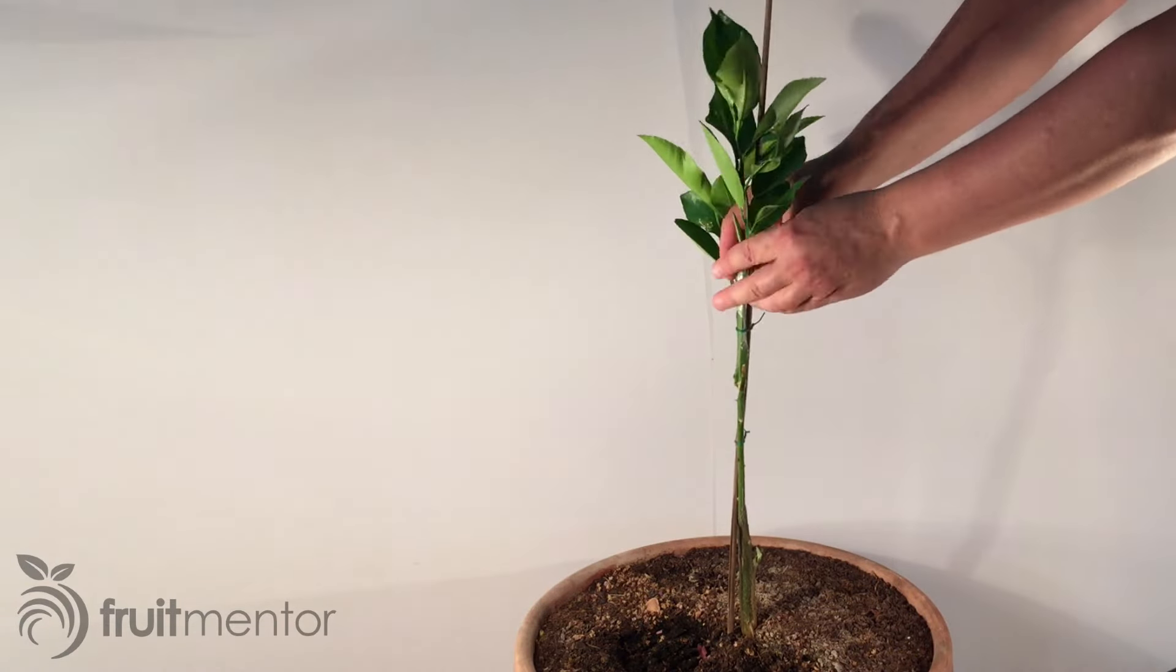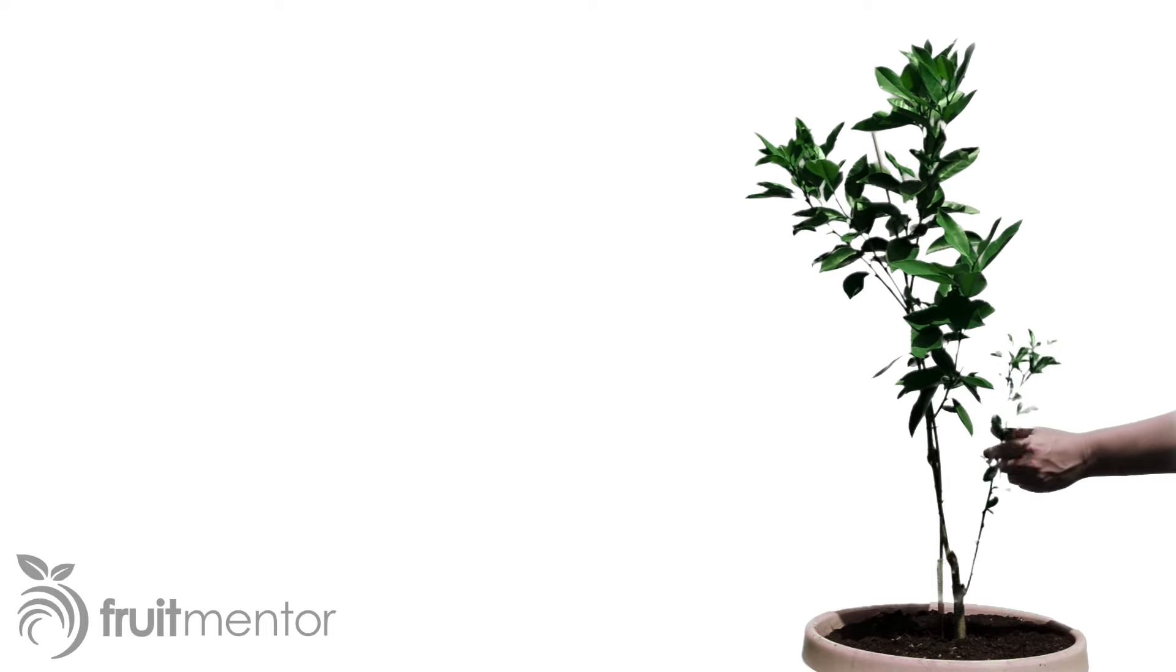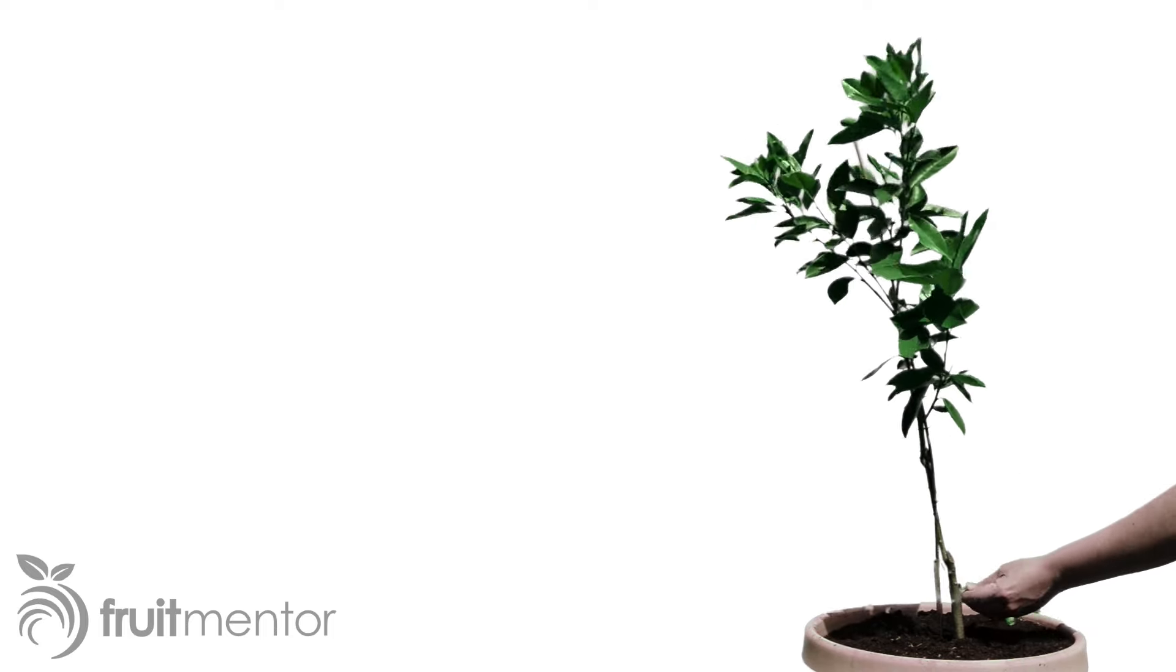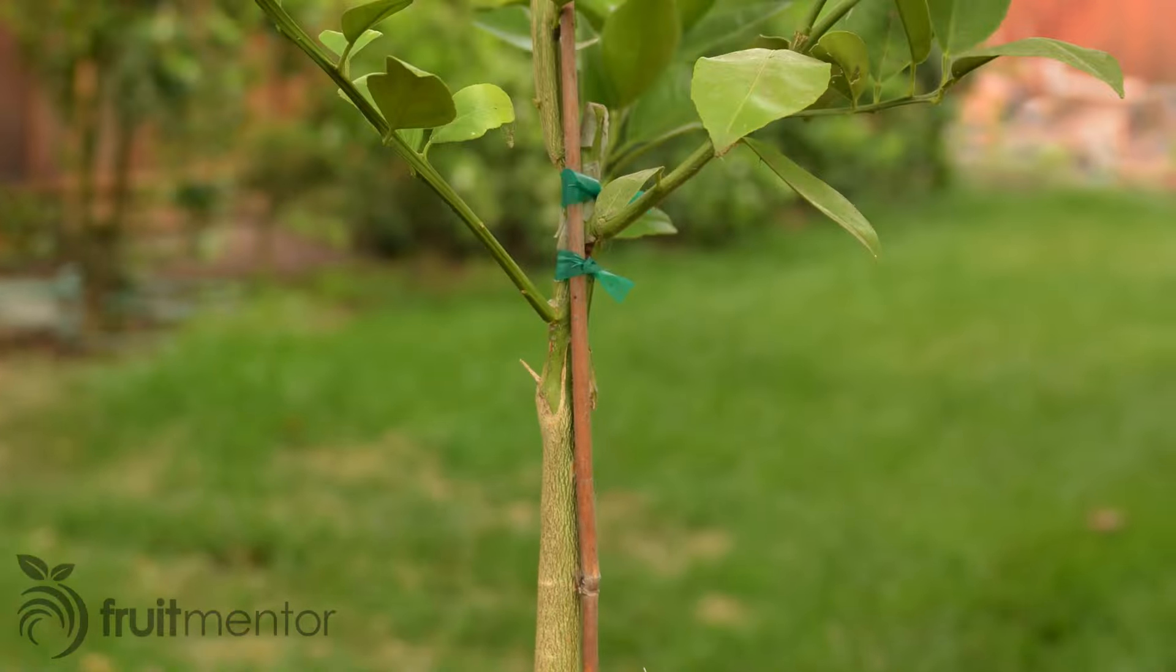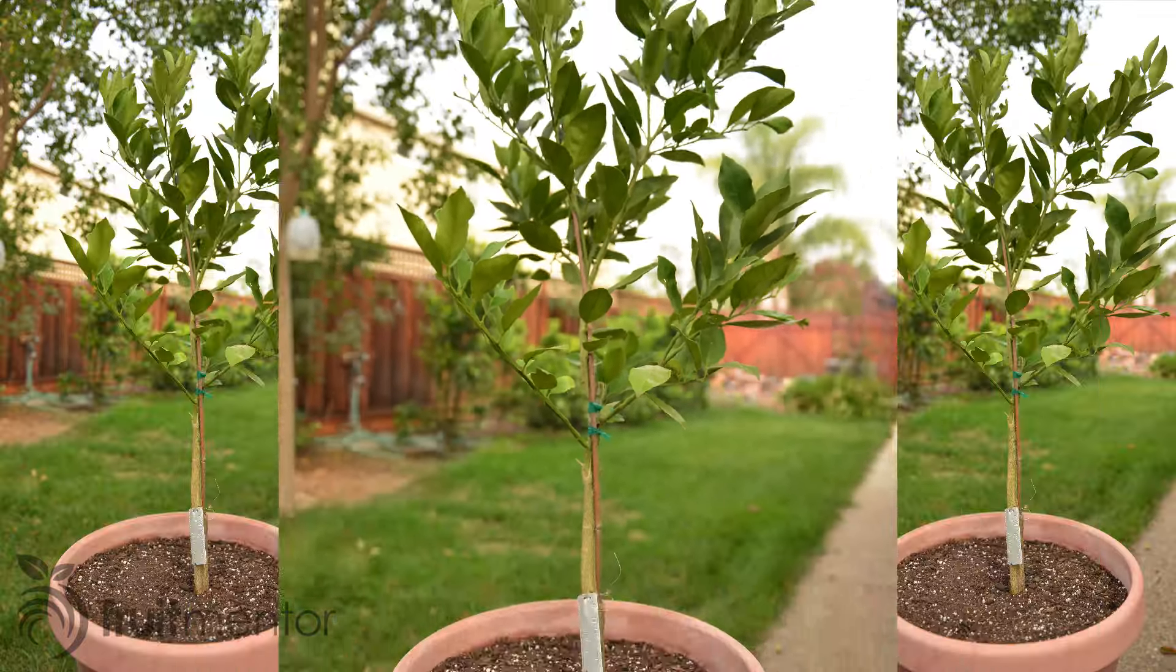Next I stake the tree. Here you see my valentine tree the following spring. It is important to remove any sprouts from the rootstock. Here you see my valentine tree ready to plant.